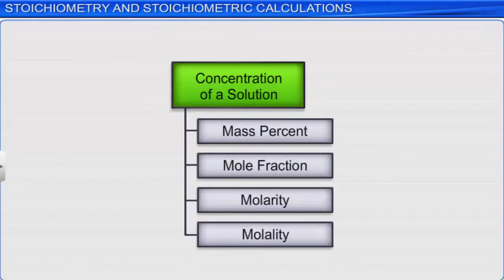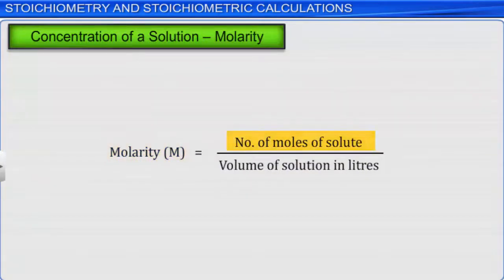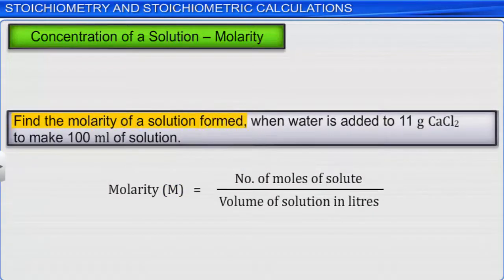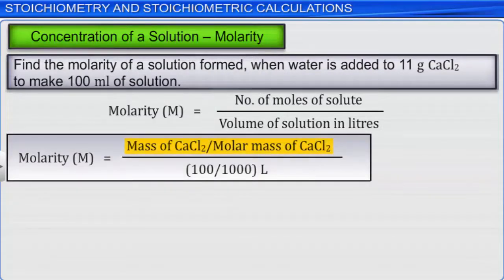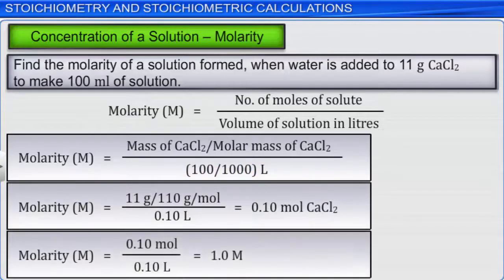Next, let's look at molarity. Molarity is the number of moles of solute in 1 litre of solution, represented as capital M. For example, to find the molarity of a solution formed when water is added to 11 grams of calcium chloride to make 100 ml of solution, we divide the mass of calcium chloride by its molar mass and convert 100 ml to litres. Applying the formula for molarity, we get the molarity of the solution as 1.0 M.